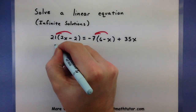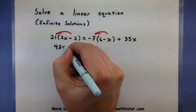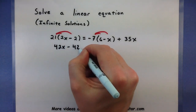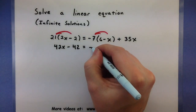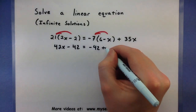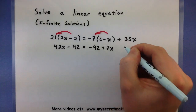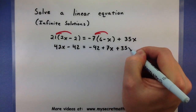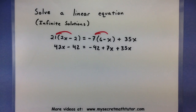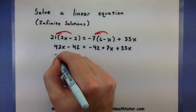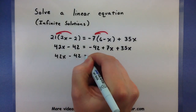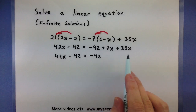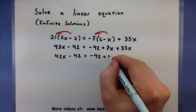This will give me 42x minus 42 equals another minus 42 plus 7x. Now that I don't have those parentheses to worry about, I can combine a few like terms: 42x minus 42 minus 42, and 7 and 35 plus 42.